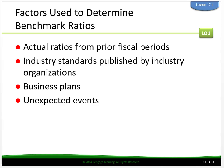Number three, business plans. Managers often make decisions that change how they conduct business. For example, managers may decide to advertise more with a goal of increasing sales. As a result, advertising expense as a percent of sales is likely to change. And number four, unexpected events. Unexpected events may require a business to revise its benchmark ratios.